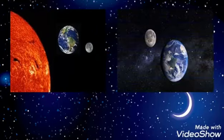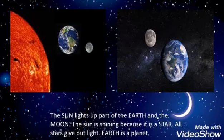The sun lights up part of the earth and the moon. The sun is shining because it is a star. All stars give out light and earth is a planet.